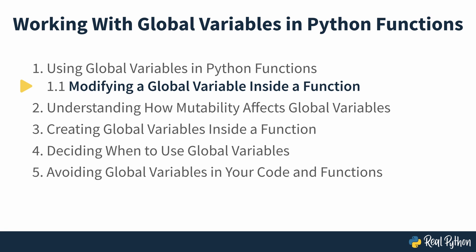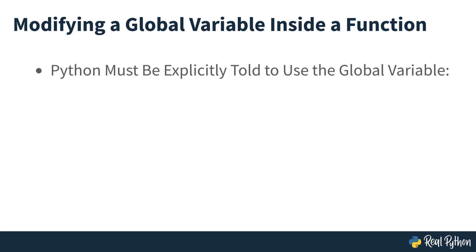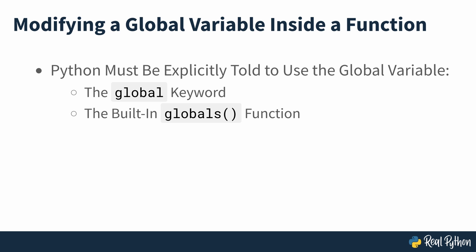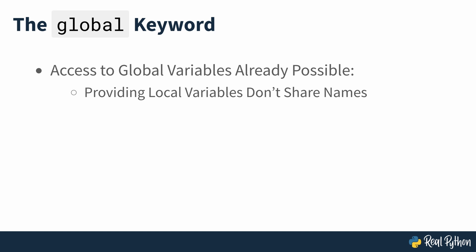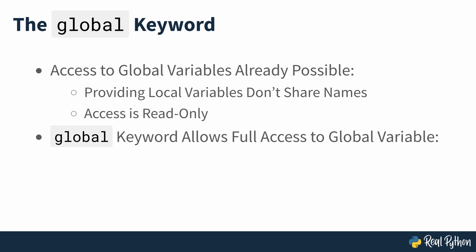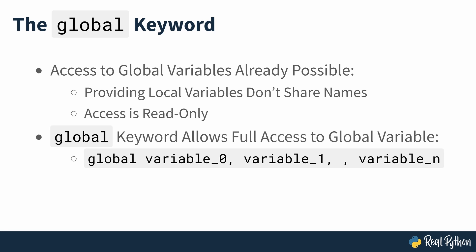Modifying a global variable inside a function. If you want to modify a global variable when inside a function, then you need to explicitly tell Python to use the global variable rather than creating a new local one. There are two ways to do this: the global keyword and the built-in globals function. Here, you'll learn how to use both tools in your code to change global variables from inside your functions. What if you also need to change the variable's value? In that case, you can use the global keyword to declare that you want to refer to the global variable. The general syntax to write a global statement is seen on screen.